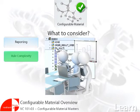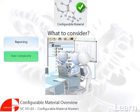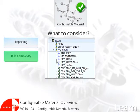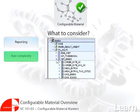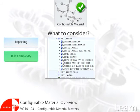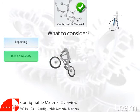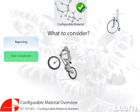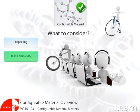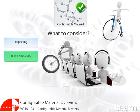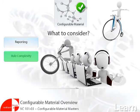Rule complexity. A single configurable material can add more rules, tables, and greater complexity in the super BOMs and routings. For example, to build the penny farthing would be quite different to a revenge mountain bike. This can require additional testing of the model to cater for these differences.